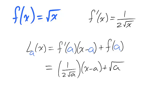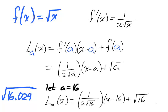Now we can use this linearization to provide a reasonable estimate of the square root of rational values. Take, for example, the square root of 16.024. The nearest value to 16.024, for which we can quickly calculate a square root, is 16. Let's take a equals 16 in our linearization.